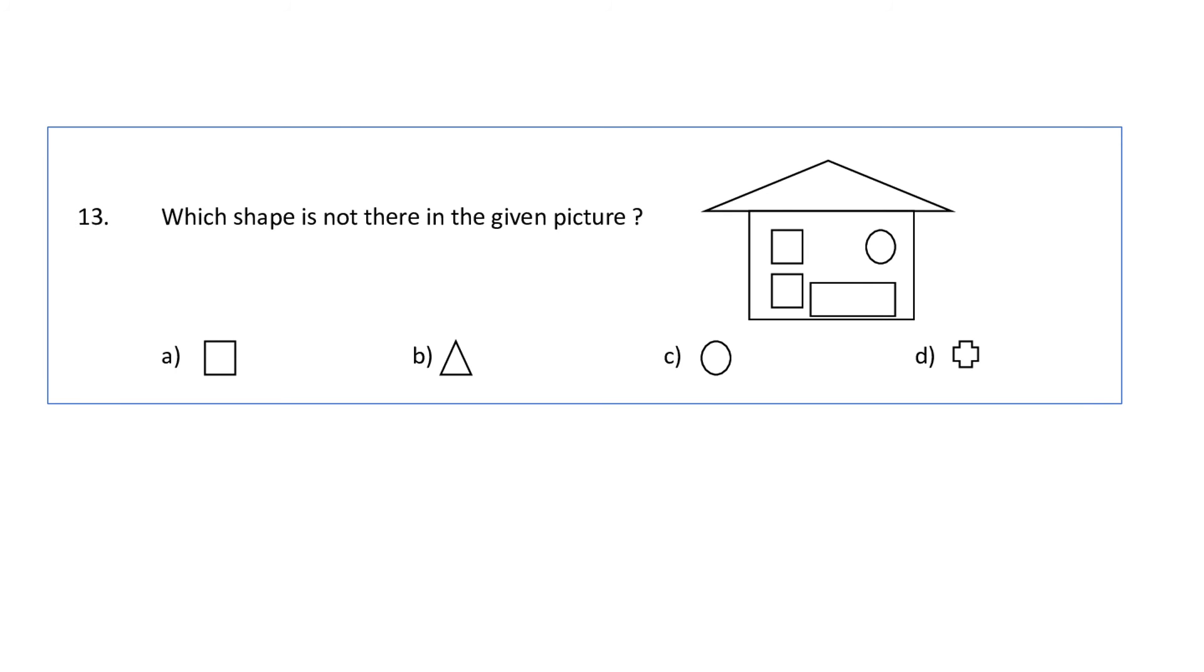Which shape is not there in the given picture? We'll check the options. First A is square shape - we can see these square shapes are there. Then triangle - the roof is triangle. Again circle - here we can see circle. And here this is a plus sign. We cannot see any plus sign in the given picture. So D will be the correct answer. The plus sign cannot be seen in the given picture.